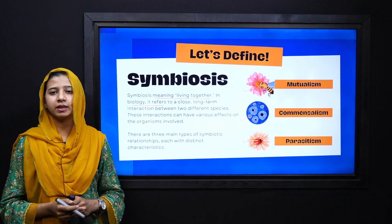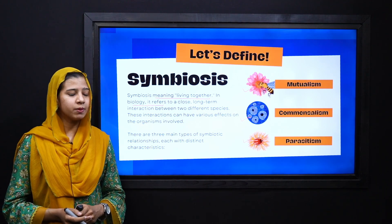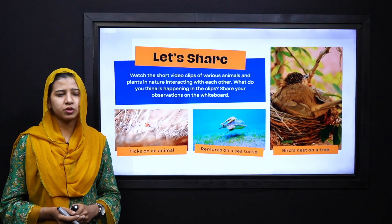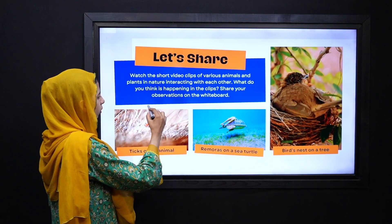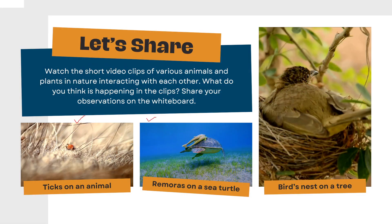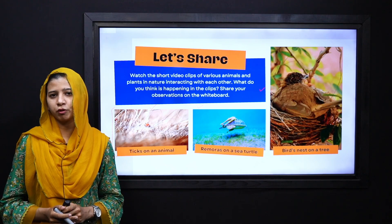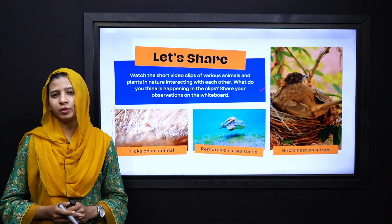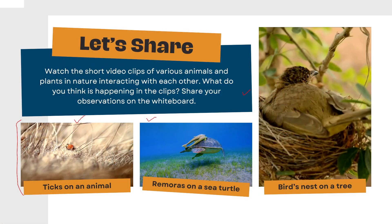Before discussing all the types, let's study some examples. Please look carefully at these images and tell me how, according to your observation, the animals in these pictures are benefiting or harming each other. So pause your video for a few seconds, observe these images, and quickly tell me your observation.